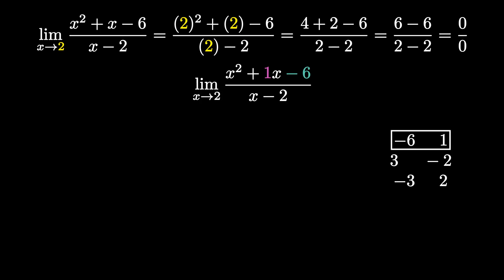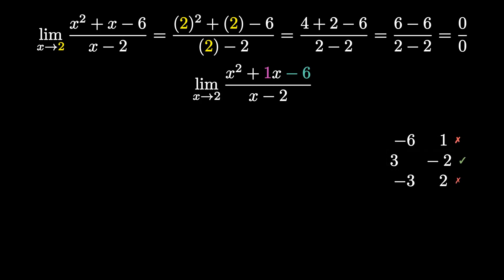Looking at our next pair, 3 and negative 2: 3 plus negative 2 is 1, which works. So our two numbers are 3 and negative 2. We don't need to check the last pair since we already found the one that works.